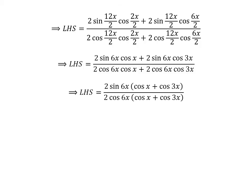Taking out the common factor 2 times sine of 6x in the numerator and 2 times cosine of 6x in the denominator, the left-hand side becomes: 2 times sine of 6x times (cosine of x plus cosine of 3x), upon 2 times cosine of 6x times (cosine of x plus cosine of 3x).